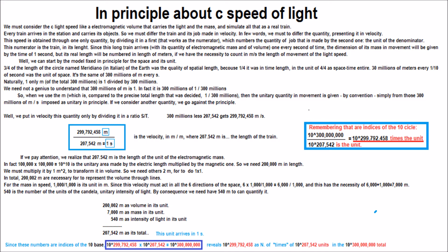This speed is obtained through one only quantity, by dividing it in a first that works as the numerator, which numbers the quantity of job that is made by the second one, the unit of the denominator.